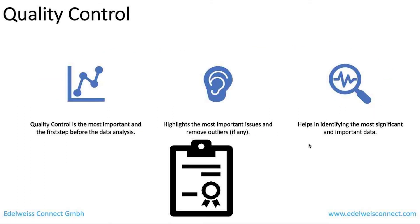The next topic is quality control. QC is the most important step before data analysis after data management. It highlights important problems in your data, allows you to remove outliers, bad data, and noise, because everything you feed into your analysis pipeline will affect your statistics in the end. Without QC, you cannot be confident in your results. QC also helps you focus on the most important and significant part of the data.